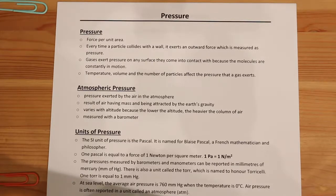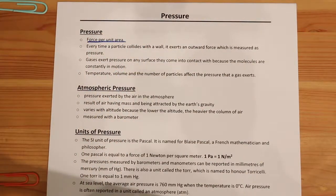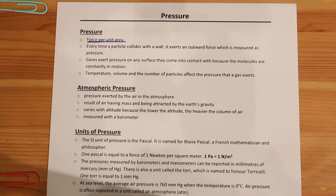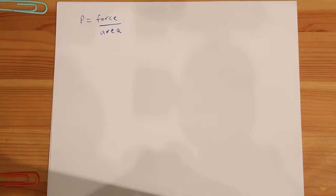The first thing we need to be aware of is that pressure is the force per unit area. What that means is that pressure is the force being exerted by an object over a particular area. If you want to take that definition and turn it into a mathematical equation, we would say that pressure equals force divided by area. So in order to calculate pressure, you divide the force being applied by the area over which that force is being applied.